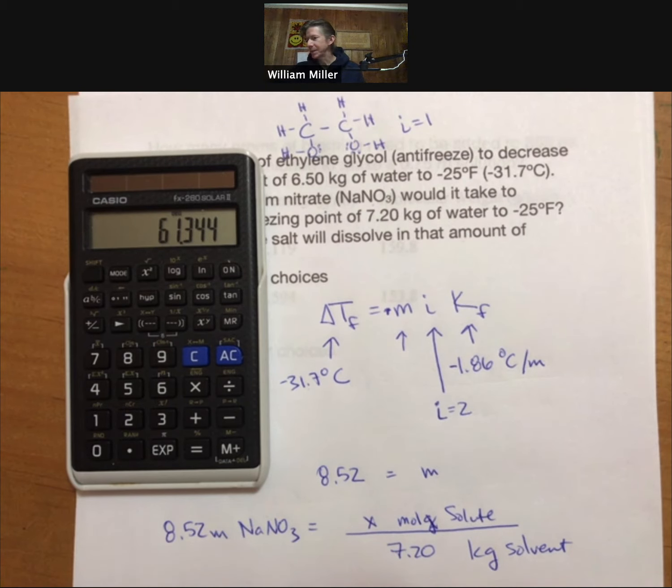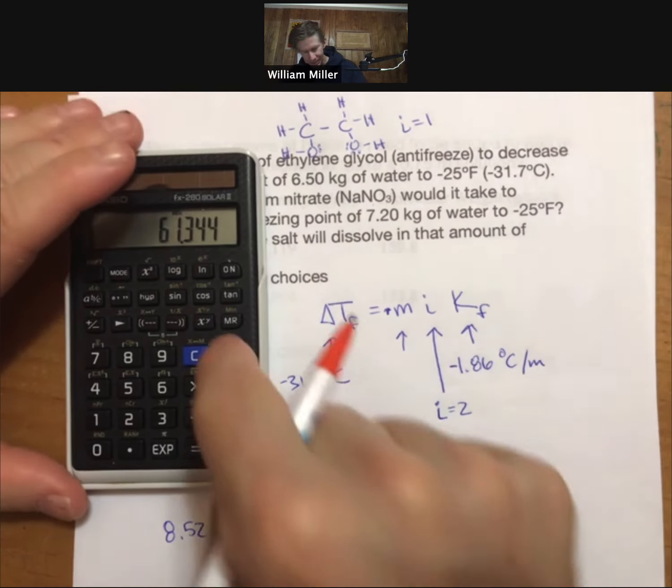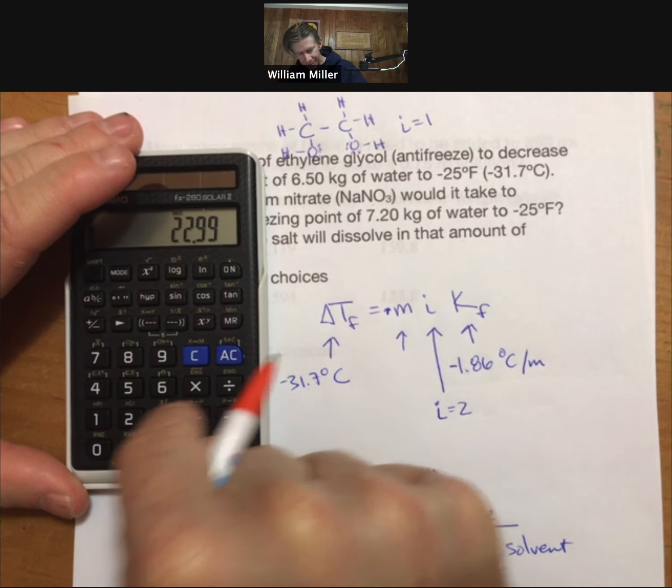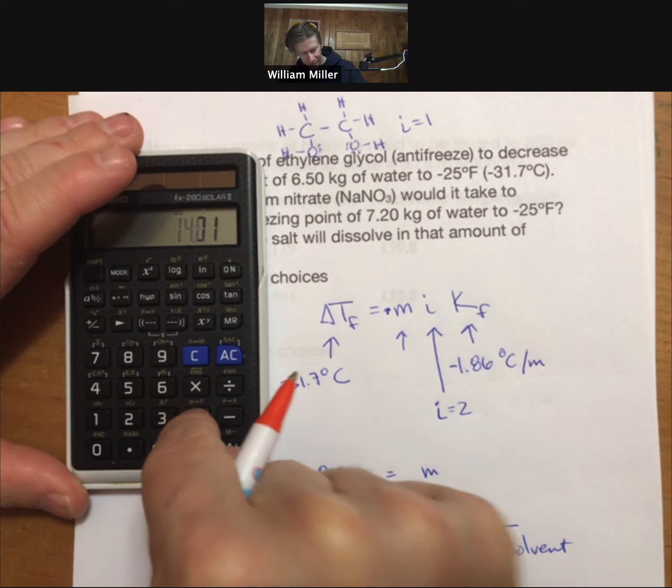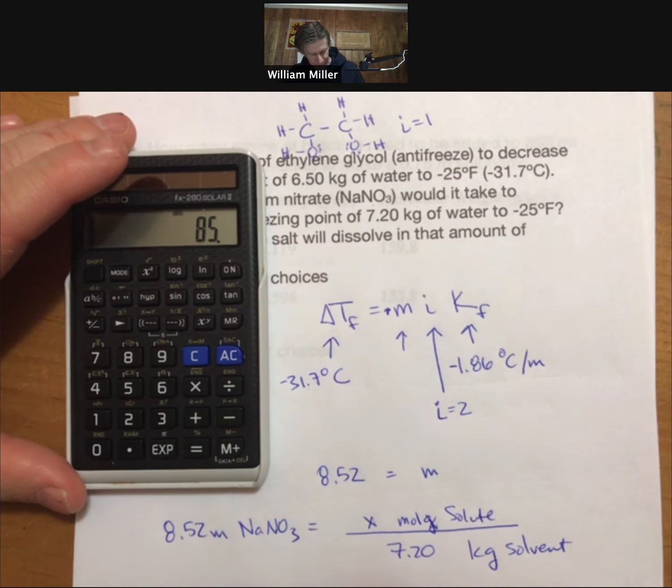For sodium nitrate, I now have my periodic table. We can look up that sodium is 22.99 plus 14.01 for nitrogen plus 48 for oxygen. We get 85.00 grams per mole.